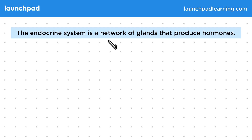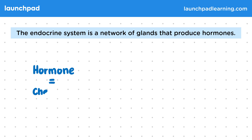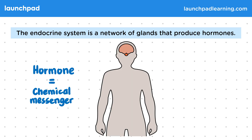The endocrine system is a network of glands that produce hormones. Remember that a hormone is a chemical messenger that travels in the blood. These glands are found all over the body. You might have noticed that there's some common ground between the endocrine and nervous systems — for example, both of them allow different parts of the body to communicate with each other.